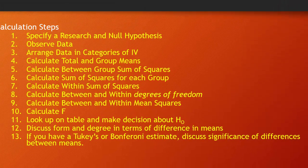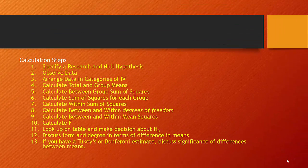Here are the calculation steps: specify your research and null hypotheses; observe your data; arrange data into categories of the independent variable; calculate total and group means; calculate between-group sum of squares; calculate the sum of squares for each group to get within-group sum of squares; calculate between and within degrees of freedom. Once you have those, compute mean squares and calculate F. Like the t-test, look up F on a table to decide about the null hypothesis, then discuss form, degree, and post-estimation statistics like Tukey's or Bonferroni.